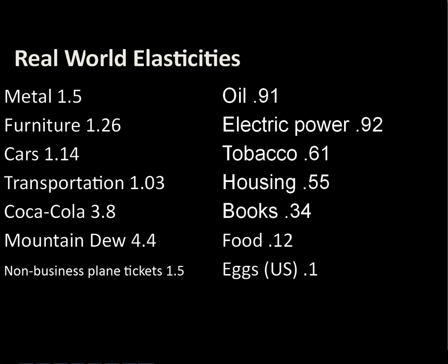On the inelastic side: oil is relatively inelastic, electric power the same. Tobacco is much more inelastic — people who smoke are deeply in that market. Housing as a category has pretty inelastic demand. Books are interesting — perhaps it's the relative cheapness of the price compared to the enjoyment people get. Food as a category is very inelastic since we need it to survive, though a Red Lobster dinner would be quite elastic. Finally, eggs are inelastic because all the bakeries and restaurants that buy them create a very inelastic demand curve.